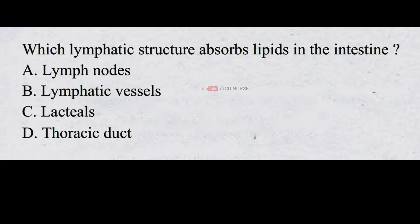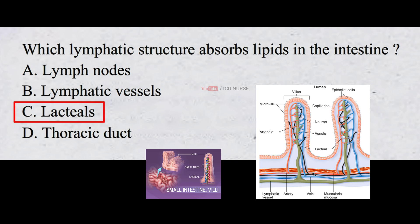Which lymphatic structure absorbs lipids in the intestine? A. Lymph nodes B. Lymphatic vessels C. Lacteals D. Thoracic duct. The correct answer is C. Lacteals. Lacteals are specialized lymphatic vessels located in the villi of the small intestine. They absorb dietary lipids and transport them into the lymphatic system.